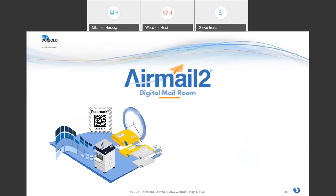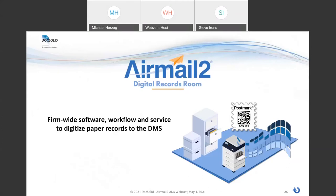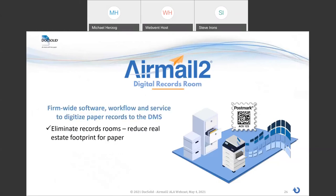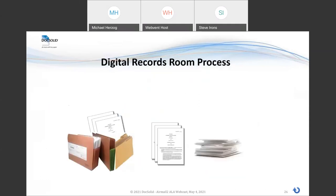AirMail 2's complementary product is the AirMail 2 digital records room — a firm-wide software, workflow, and service to digitize paper records to the document management system. That's going to help us eliminate records rooms, reduce the real estate footprint for paper, fulfill document requests digitally for workers at home, and ultimately stop the flow of records to off-site storage. Here's the AirMail 2 digital records room software. Similarly to the mailroom, we've got four batch steps. Step one: we're dealing with red welds or files — we prep the paper the same way, take it out and get it ready.